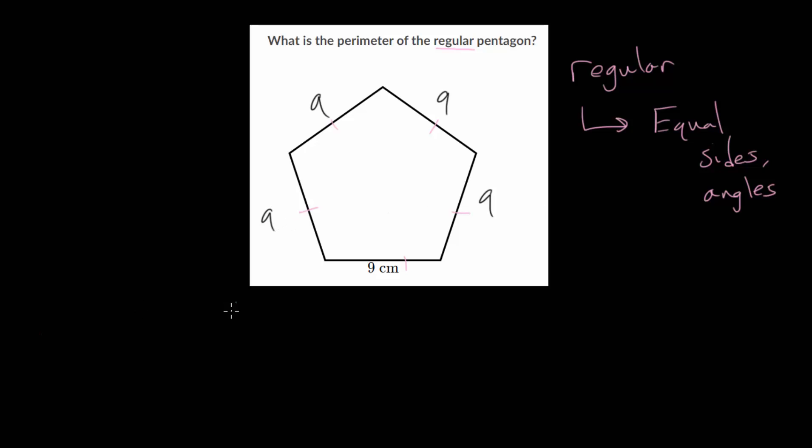So when finding the perimeter of this shape, which we'll call P, we're going to add 9 five different times. We have repeated addition, and when you see repeated addition, you can think multiplication. We are really just multiplying 9 by 5. That should make sense since we have a pentagon, and that is a polygon with five sides.